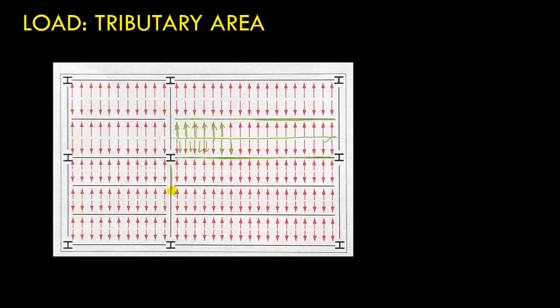Half of the load transfers to this beam, and similarly half transfers to the other beam. Similarly we calculate load on girders. In this case I have this girder, and on it two joists are resting — one point of contact here and another point of contact here. Whatever reaction or shear force at the ends of the joist will be transferred at these contact points. The main idea of the tributary area concept is to divide the area so that an equal portion of the load gets transferred to different parts of beams and girders.